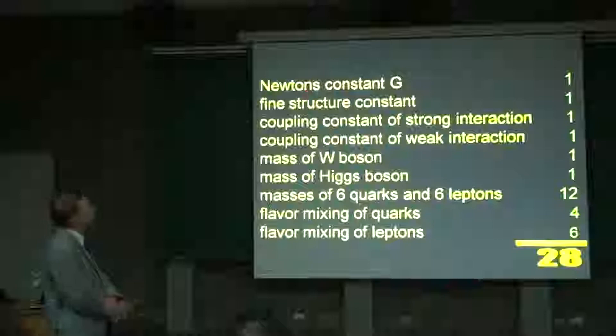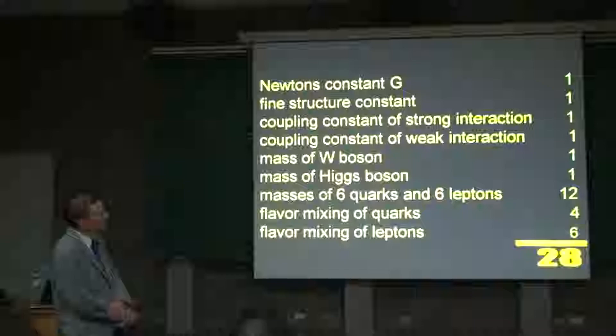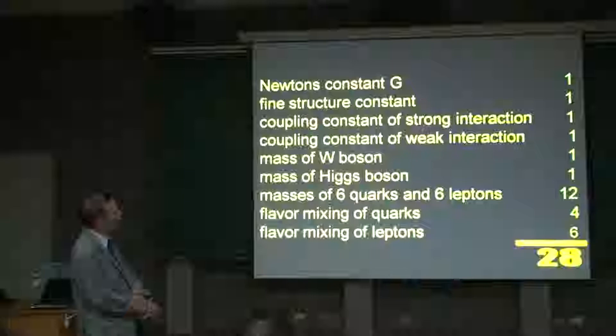Here is a list. Starting with Newton's constant G, then the fine structure constant, then we have the lambda QCD scale, and there is a coupling constant for the weak interaction. These are all the coupling constants — 3 of them, because there are 3 gauge groups: the SU(3) of color, SU(2), and U(1).